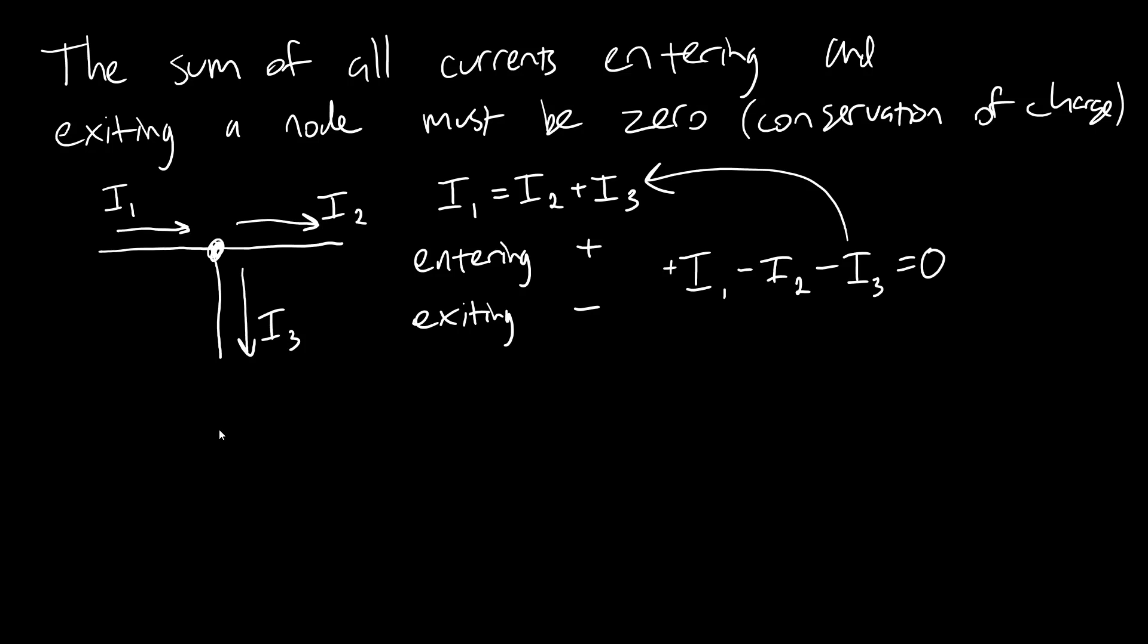So, I tend to like this form because I think it's more intuitive. But if you like summing things and setting them equal to zero, you may prefer this one. Again, these are mathematically identical. You can also write this more generally using summation notation. So, say you have some crazy node with tons of wires coming out of it. You could write the sum from j equals 1 to N where there are N wires of the current. The sum of all those currents must be zero as long as I'm following this sign convention where currents exiting are negative.